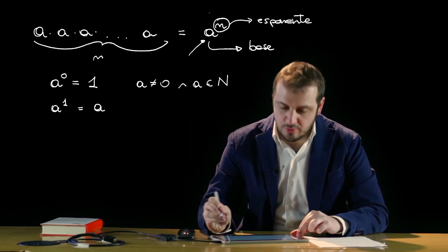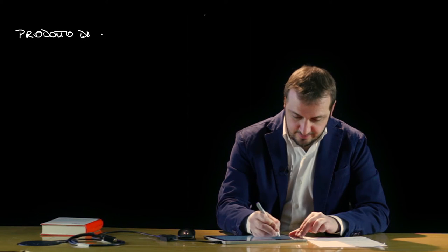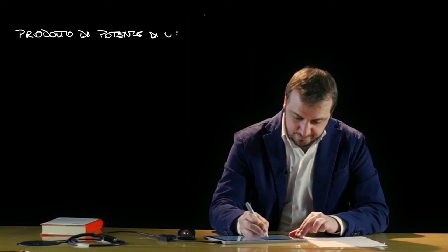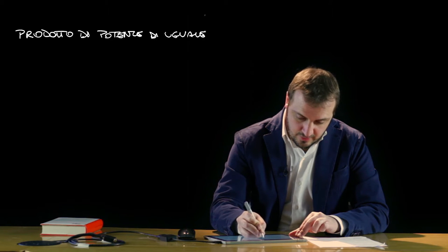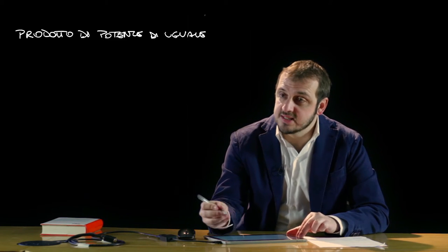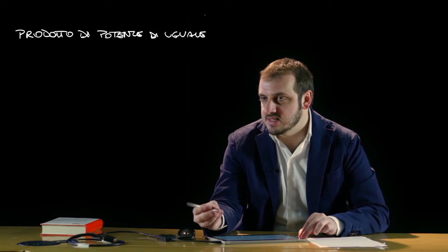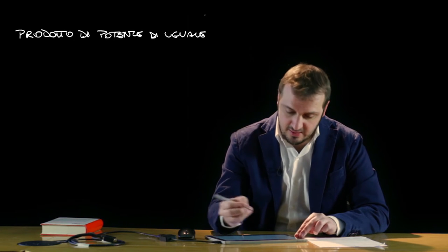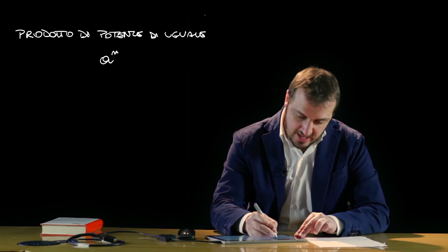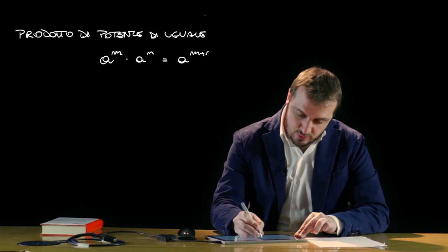Le principali proprietà delle potenze vanno a descrivere alcune operazioni che è possibile fare tra le potenze. La prima fondamentale operazione è quella del prodotto di potenze caratterizzate dalla stessa base, che è una potenza che ha per base la stessa base e per esponente la somma degli esponenti, per cui a alla m per a alla n sarà uguale ad a alla m più n.